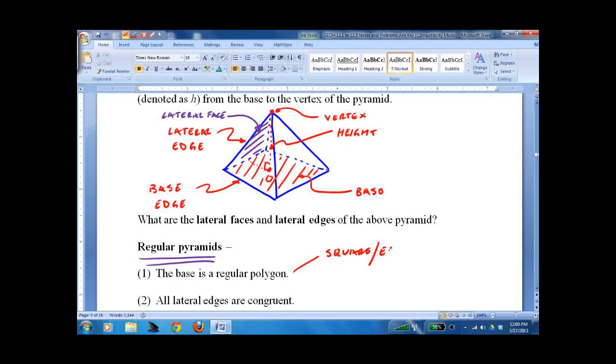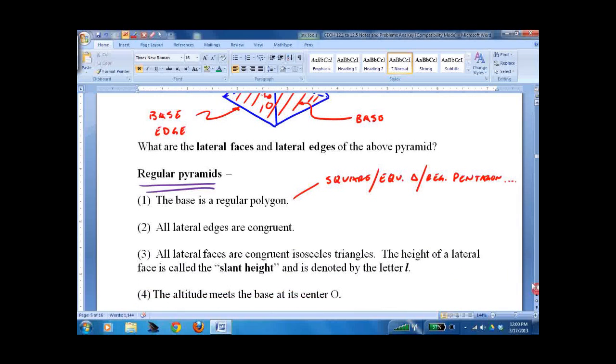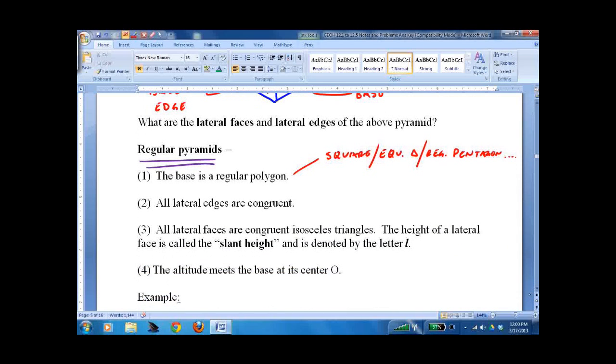Equilateral triangle, regular pentagon, regular hexagon, regular octagon, so on and so on. All the lateral edges are congruent, so they form isosceles triangles. They could be equilateral, but they're definitely isosceles triangles. So you take the lateral face and you look at it, and it forms, you know, 10, 10, 8, something like that. The lateral edges are always the same, the base edges whatever.